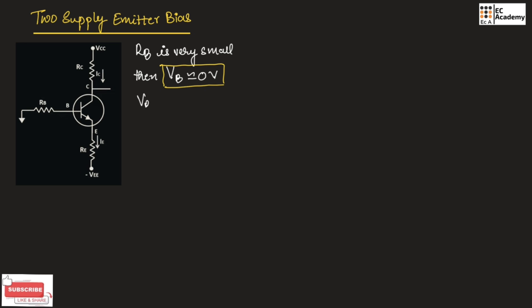We know Vbe can be written as Vb minus Ve. Since Vb is equal to 0, we can write Ve is equal to minus Vbe. Since Vbe equals 0.7, Ve will be equal to minus 0.7 volts.